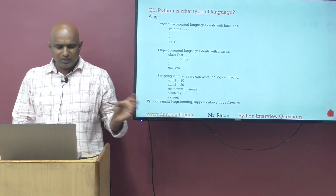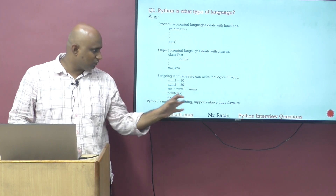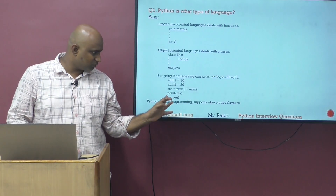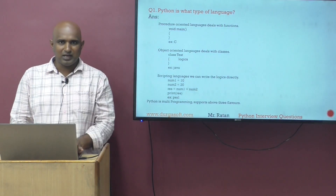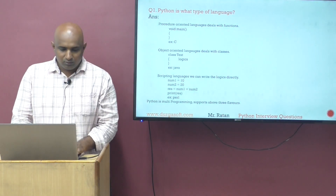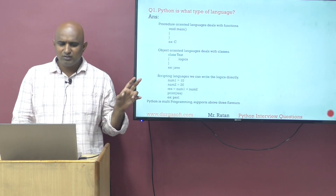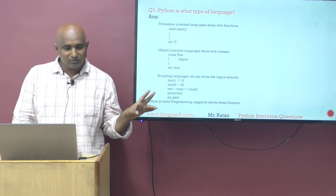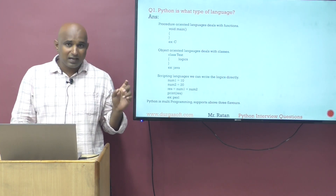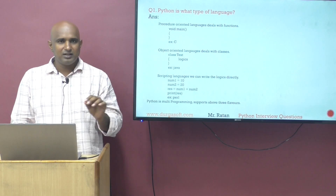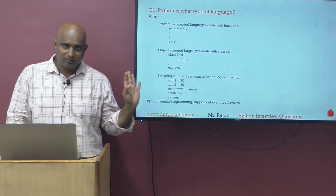If it is scripting languages, we can write the logic directly. For example: num1 = 100, num2 = 100, result = num1 + num2, print result. Perl is basically a scripting language; we have multiple scripting languages. So procedure-oriented languages deal with functions, object-oriented languages deal with classes, and scripting languages let you write the code directly.